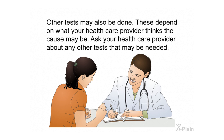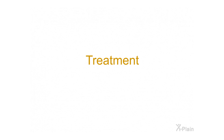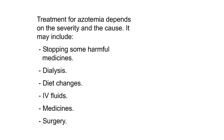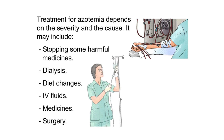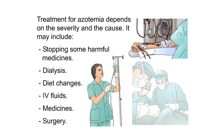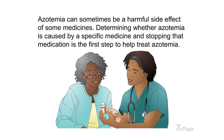Treatment. Treatment for azotemia depends on its severity and cause. It may include stopping some harmful medicines, dialysis, diet changes, IV fluids, medicines, or surgery. Azotemia can sometimes be a harmful side effect of certain medicines. Determining whether azotemia is caused by a specific medicine and stopping that medication is the first step in treatment.